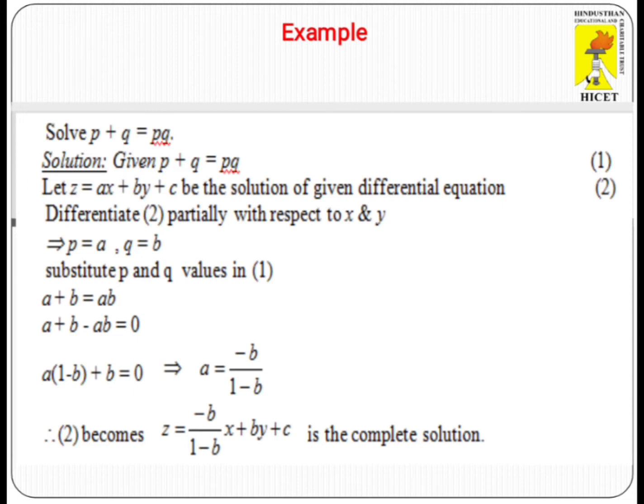Now we have the value of A. Substituting in the general solution, Z equals (-B / (1 - B))·X + BY + C, which is the complete solution or complete integral of the given partial differential equation.